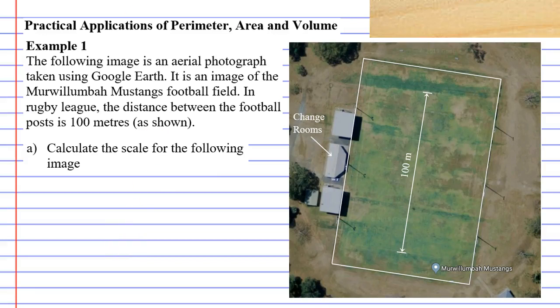In this video, we are going to look at practical applications of perimeter, area, and volume. We're going to start with example one, and here we have an image I have taken from Google Earth. It is an image of the Mwoolumba Mustangs football field.